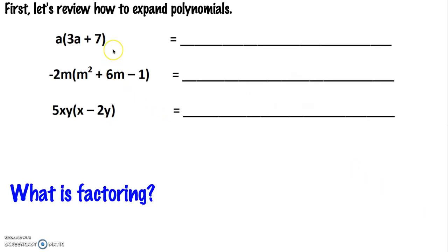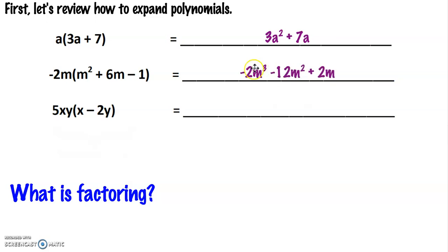First, let's review a little bit about how to expand polynomials. If I'm multiplying a times 3a plus 7, that's going to look like 3a squared plus 7a. If I were to distribute negative 2m across m squared plus 6m minus 1, I'm going to get negative 2m cubed minus 12m squared plus 2m. And if I were to multiply 5xy times x minus 2y, I'd get 5x squared y minus 10xy squared.